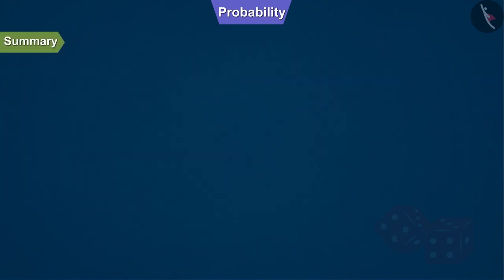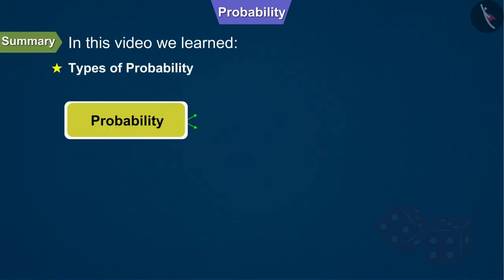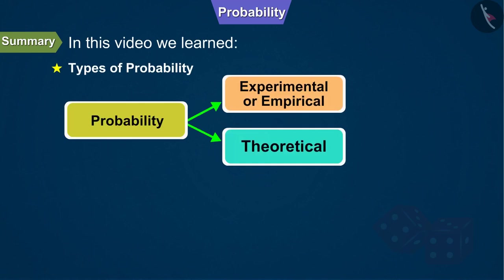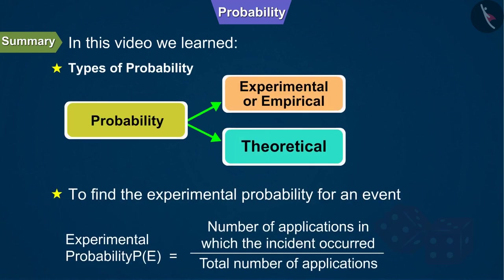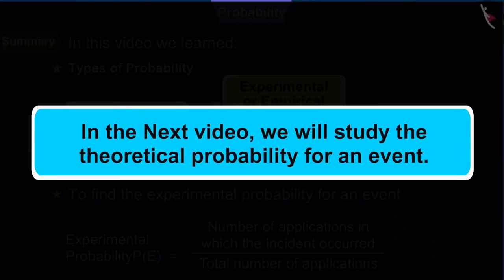Today in this video, we learned to find the type of probability and the experimental probability for an event. In the next video, we will study the theoretical probability for an event.